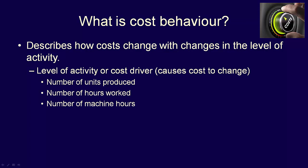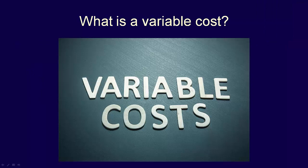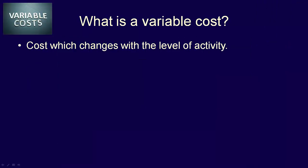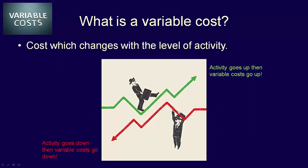Now that we understand cost behavior, which is how costs change when the level of activity changes, let's get back to what is a variable cost. A variable cost is a cost that changes when the level of activity changes. If the level of activity goes up, total variable costs will go up. If the level of activity goes down, total variable costs will go down.